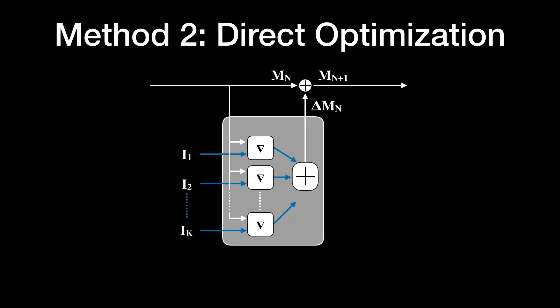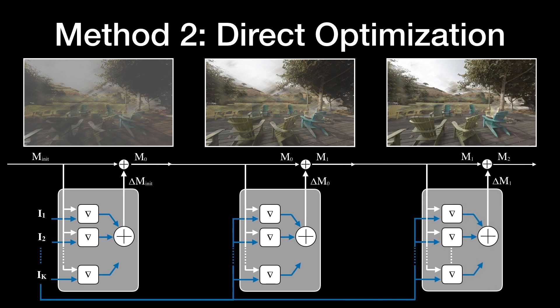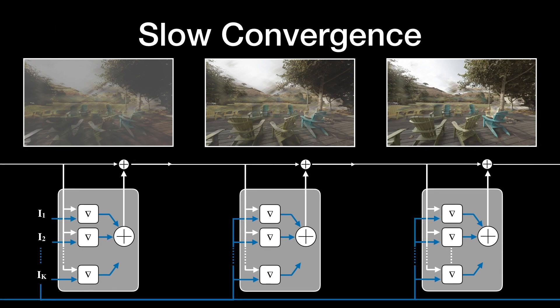Another possible approach to generating an MPI is to model it as an inverse problem and iteratively optimize its parameters with standard gradient descent. The gradients are computed from the difference between the input images and the images rendered from the MPI. By starting from an initial MPI and iteratively improving it, such an approach intrinsically models visibility between the MPI and the input images.